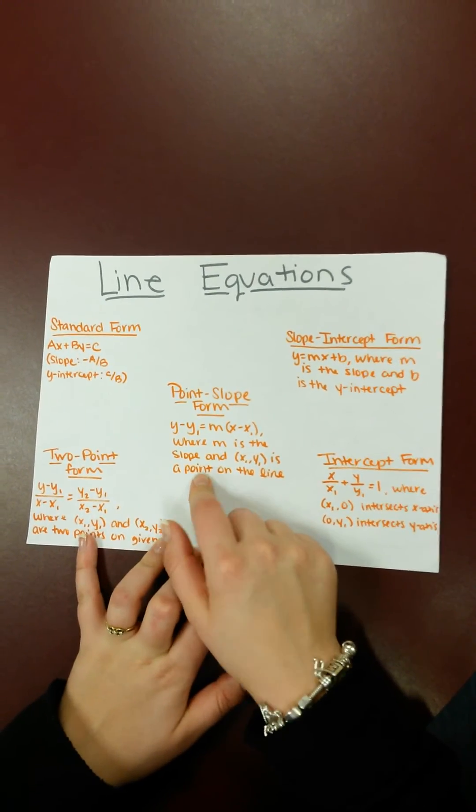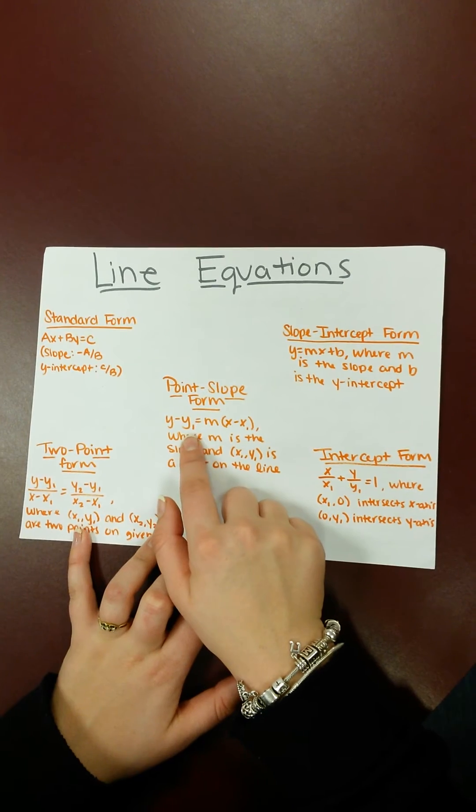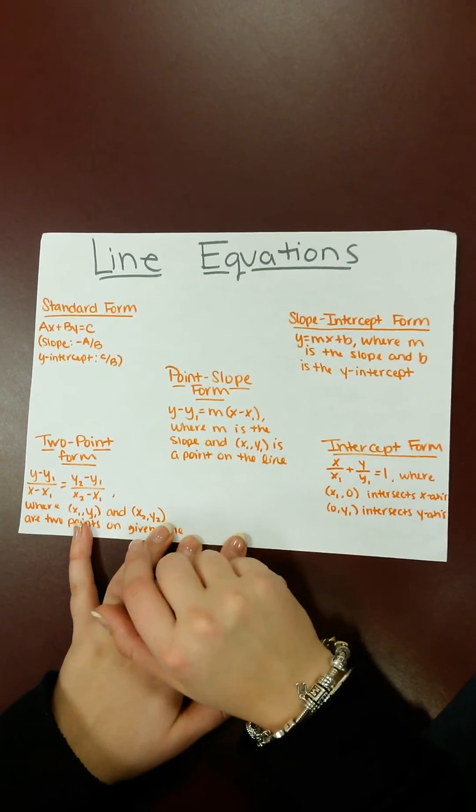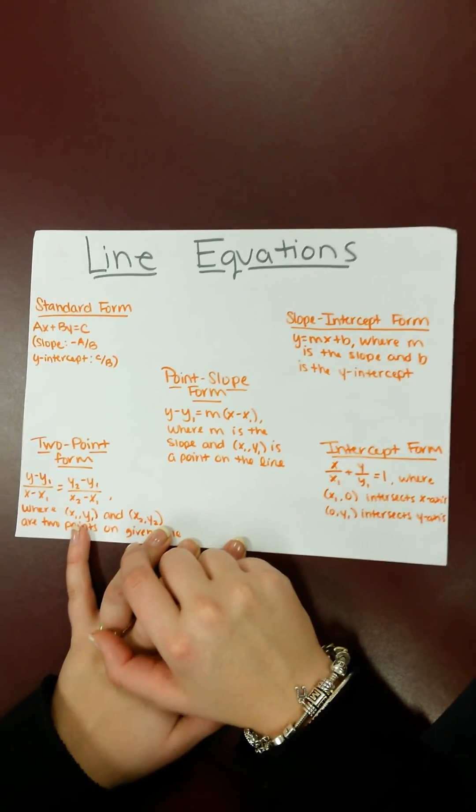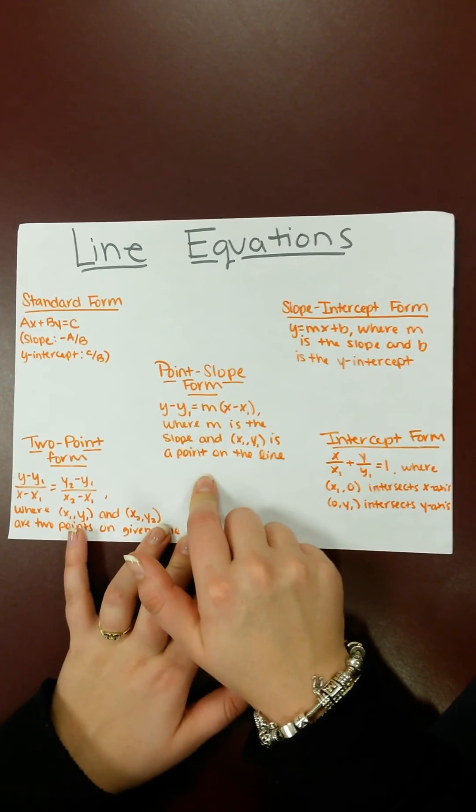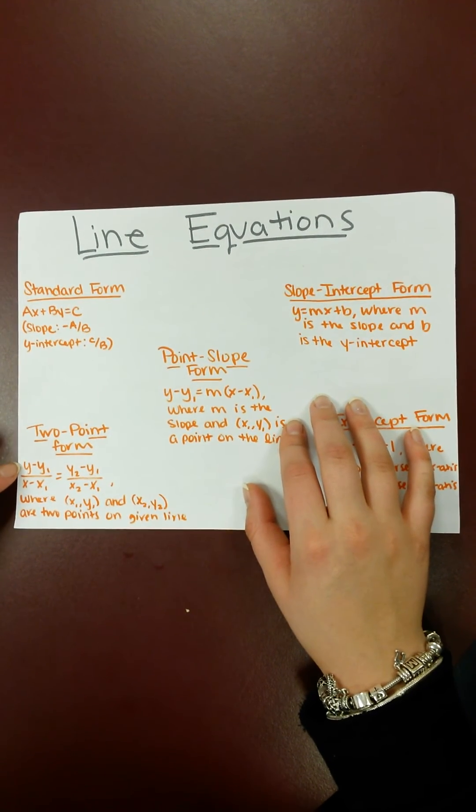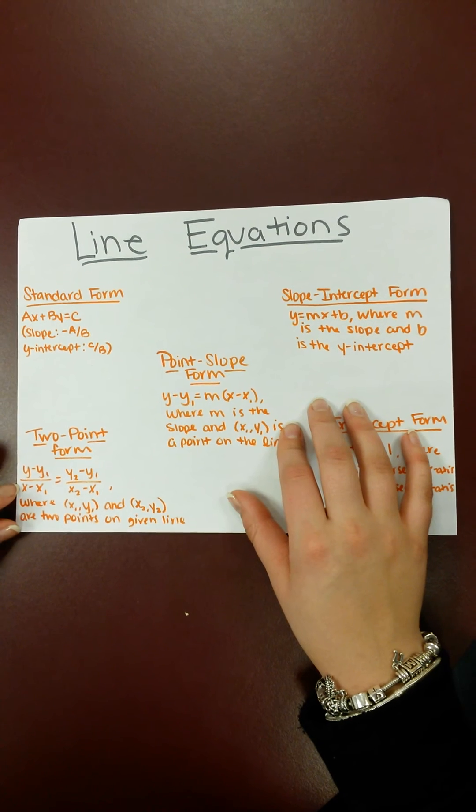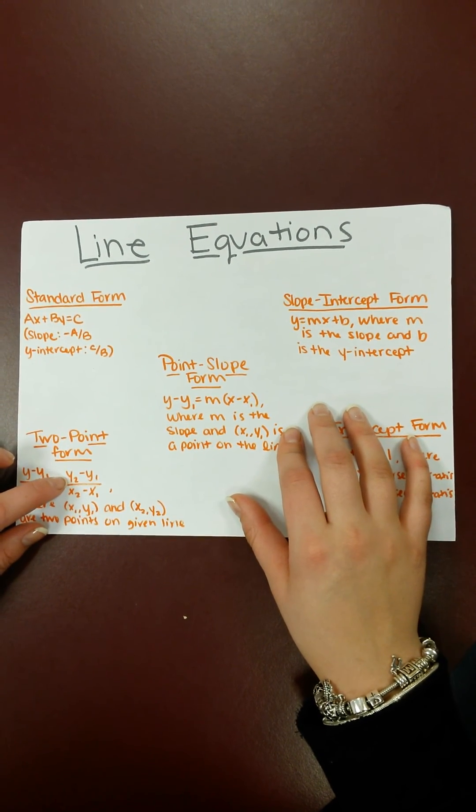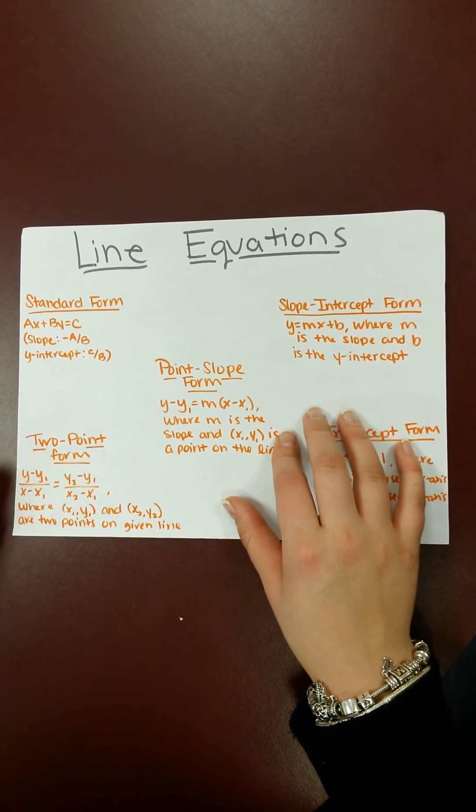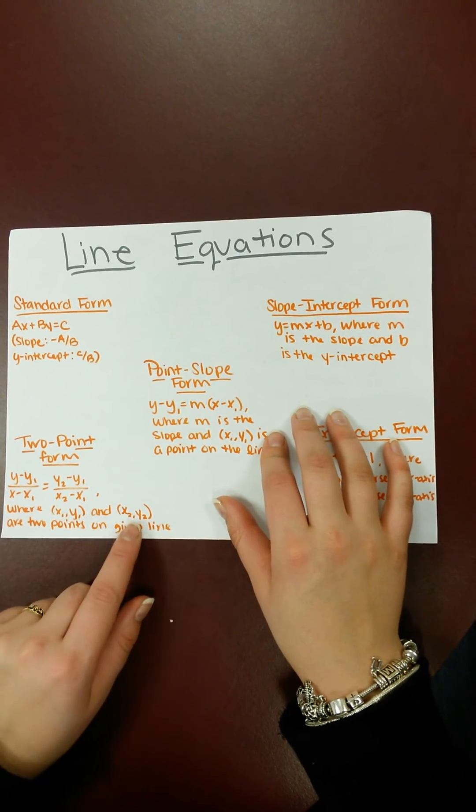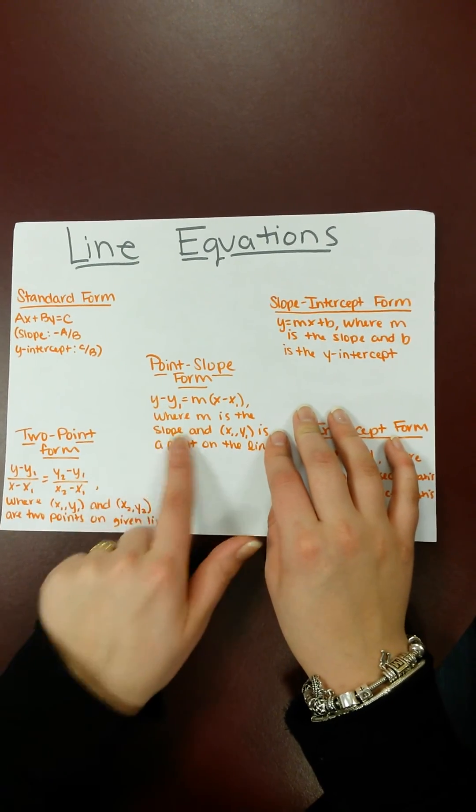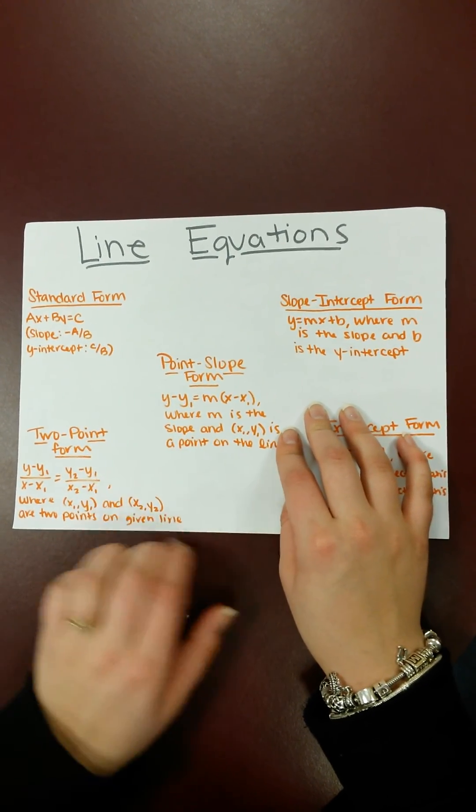So next is point-slope form, and that's Y minus Y1 is equal to M times X minus X1, where M is still the slope, and X1, Y1 is a point on the line. The next is two-point form, and that's Y minus Y1 over X minus X1 is equal to Y2 minus Y1 over X2 minus X1, where X1, Y1, and X2, Y2 are two points on the given line. And these two are also the same, just wrote in different formats.